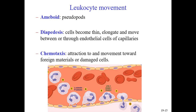The second type of movement is diapedesis. This is where the white blood cell becomes thin and squeezes itself between the cells of the blood vessel wall, allowing it to exit the bloodstream and move out into the surrounding tissues.